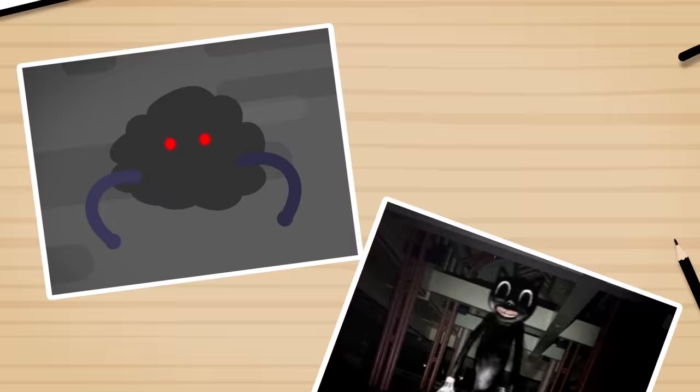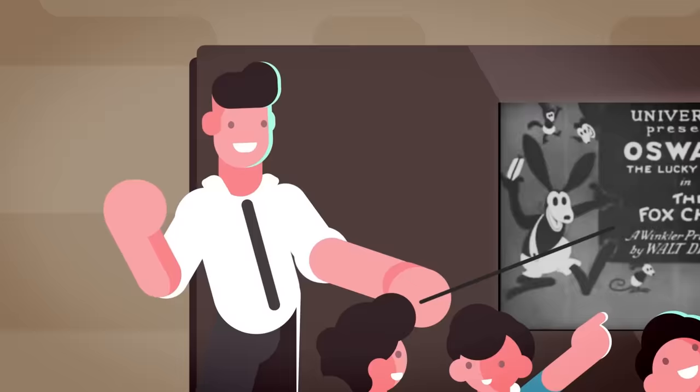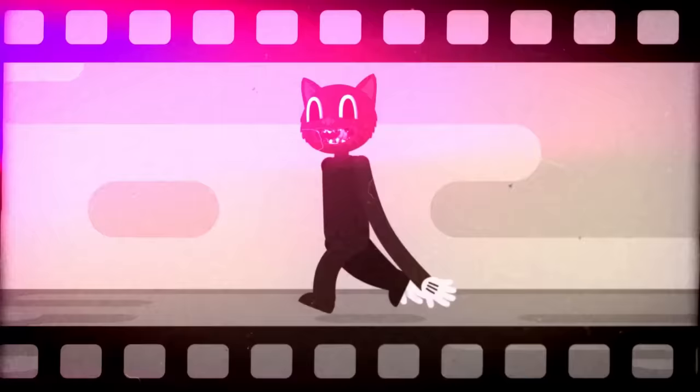One such form is the cartoon dog with the same unsettling rubber hose appearance. Rubber hose was the first popular animation style standardized in the US, and would have been what the Cartoon Cat was originally animated in. The name is derived from the fact that the character's limbs would move as though they don't have bones, more like rubber hoses. Cartoon Cat's long, stretchy, boneless limbs are no exception.